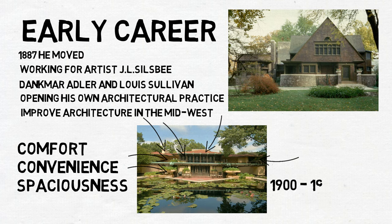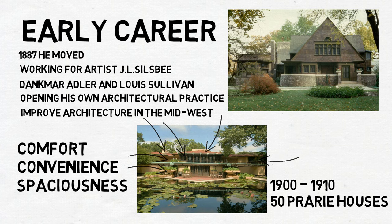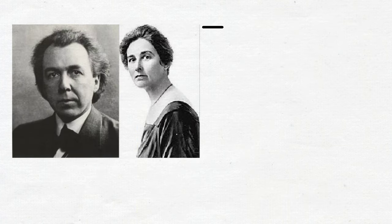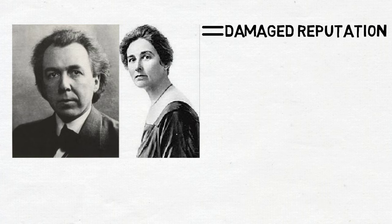Between 1900 and 1910, Frank Lloyd Wright alone built 50 prairie houses. By 1909, Wright's estrangement from his wife and then relationship with Mamacini, wife of a former client, damaged his reputation enough that commissions were hard to come by.